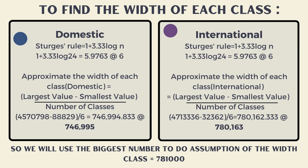To find the width of each class, we need to take the maximum value minus the minimum value and divide by the number of classes. To compare the domestic and international class widths, we will use the largest number to make assumptions about the class width, which is 78,100 for both domestic and international.